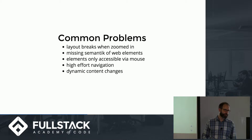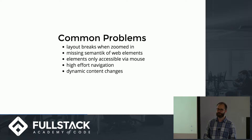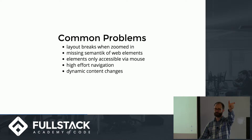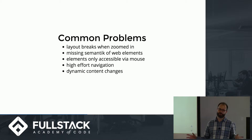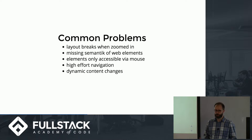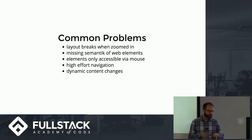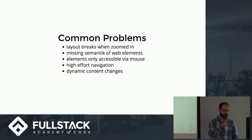Another problem is dynamic content changes. All the websites we've been building are very dynamic — for example, you click a button and somewhere else on the page the text of an element changes. Without doing anything extra, the screen reader will not recognize those changes, and the blind user will not know what's going on.